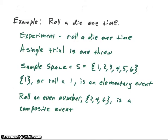Let's look at an example that shows some of these terminology. We're going to roll a die one time and see what the result is. We're talking about a six-sided die here. The experiment is rolling of that die one time. A single trial is just one throw of that die.